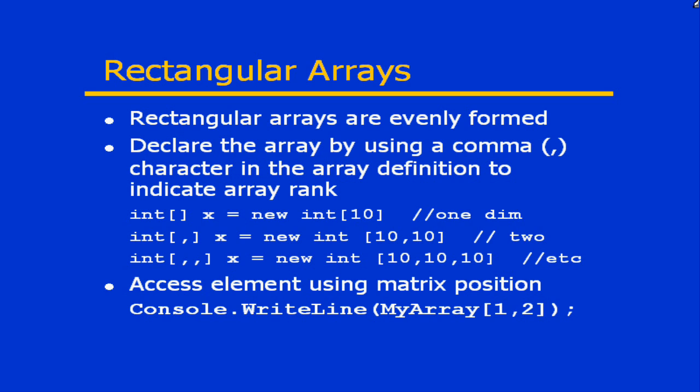To access elements in a multi-dimensional array, we use the matrix position instead of a single indexer as we did with a single-dimension array. For example, if I have an array called myarray which is a two-dimensional array, and I want to access the element at coordinates 1, 2, by specifying 1, 2 inside the square brackets, I am identifying the element at the intersection of the second element of the first dimension and the third element of the second dimension. Whatever that value is would be printed out to the console.